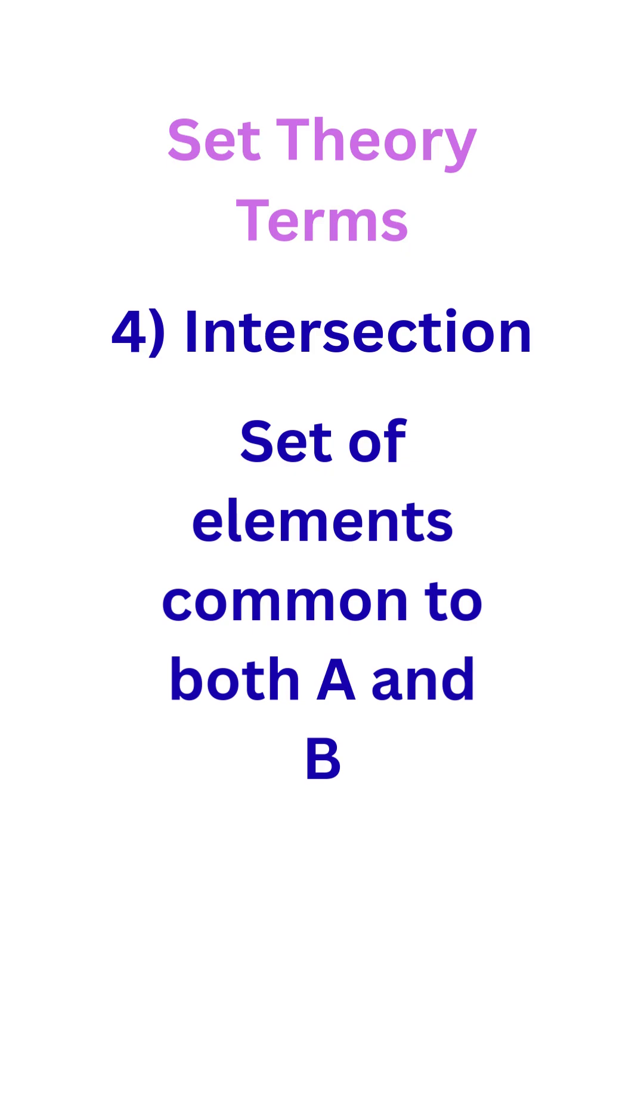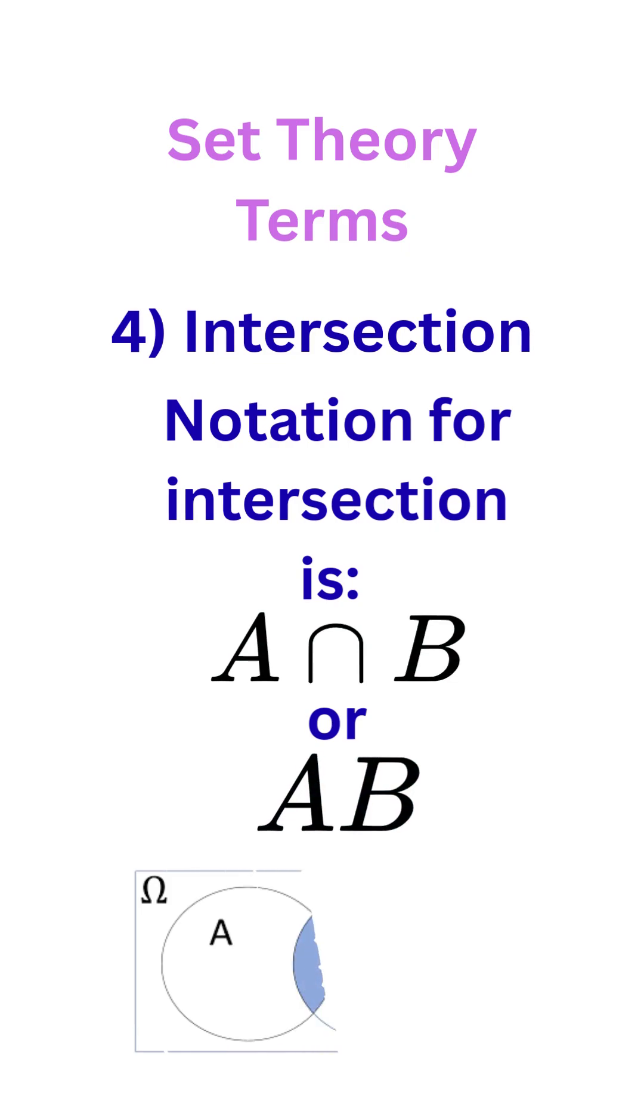Intersection. Set of elements common to both A and B only. This is the notation for an intersection, and there are two forms of it, and as the Venn diagram shows, the intersection is only the elements that are common to A and B, that shaded portion right there. Hope you liked it. Follow for more.